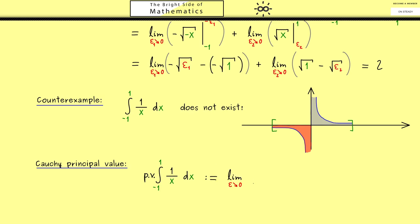Now the overall idea is that we just use one epsilon for the definition of the limit. So first we go from minus one to minus epsilon, and then in the second part we go from epsilon to one.